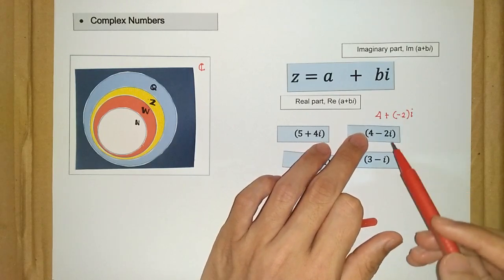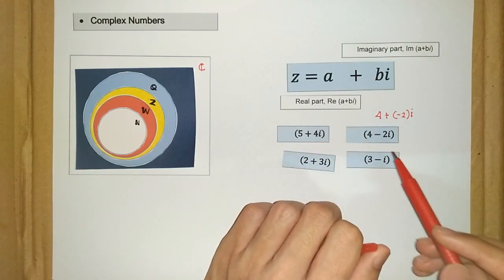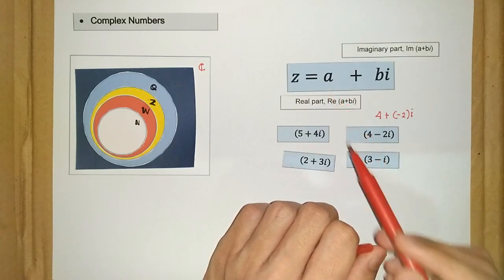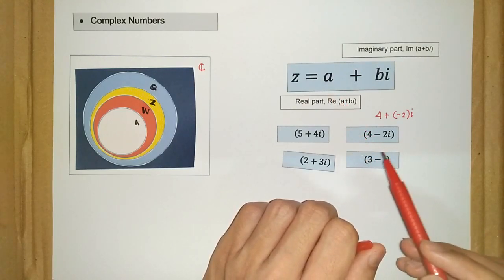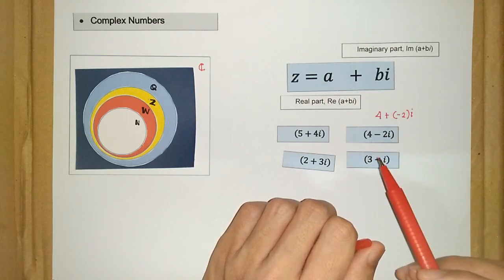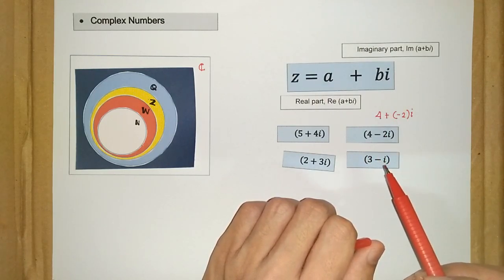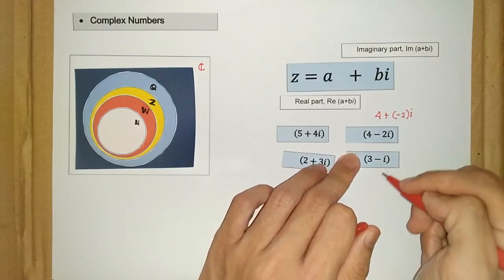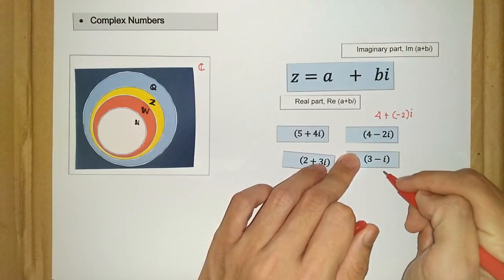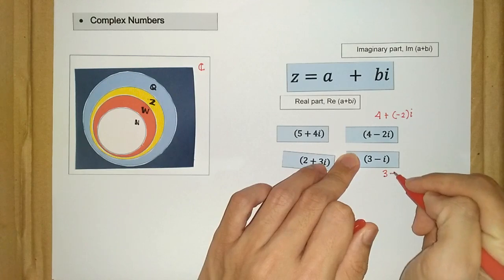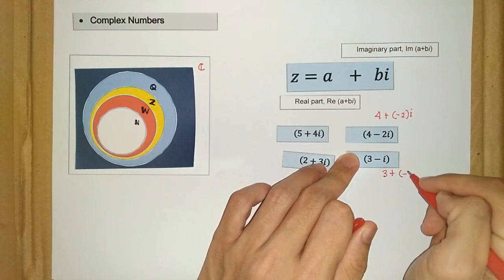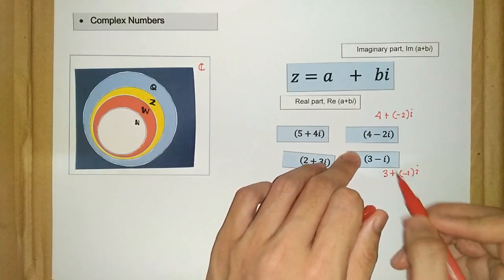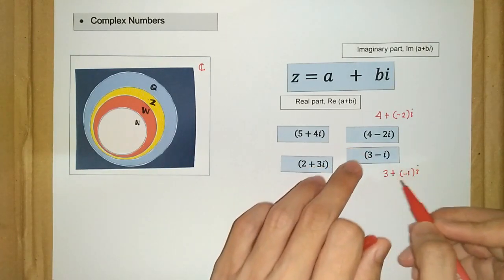The same applies to the fourth example. We have 3 as the real part, and the imaginary part is negative 1, because we can write it as 3 plus negative 1i. So b, or the imaginary part, is equal to negative 1.